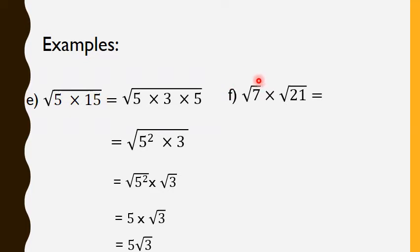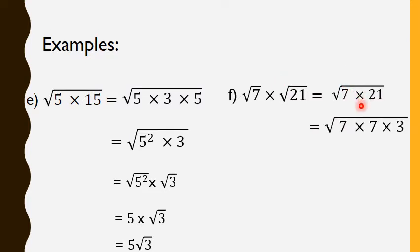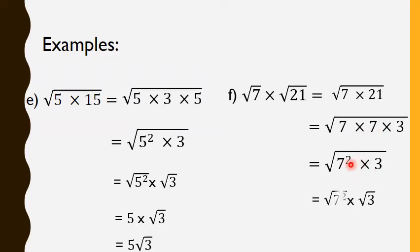Here is the last example: radical 7 times radical 21. We put them under one radical: radical 7 times 21. And 21 comes from 3 times 7. So, we say radical 7 times 7 times 3. Now, 7 times 7 is 7 squared. So, radical 7 squared times 3. We apply the rule: equals to radical 7 squared times radical 3. Radical 7 squared is 7, and we keep radical 3. So, finally, 7 radical 3.